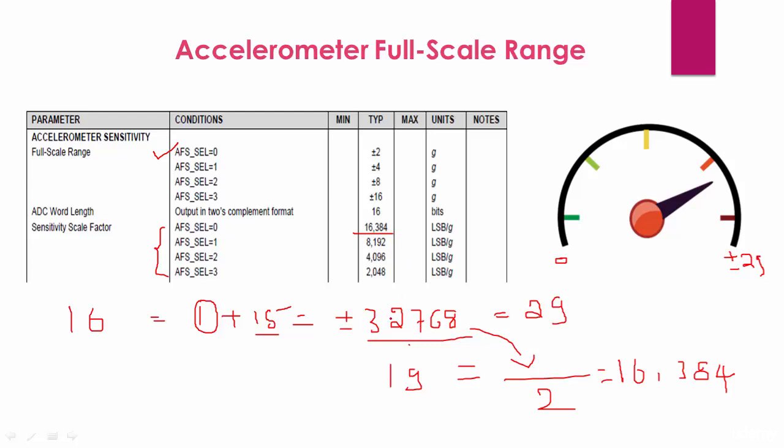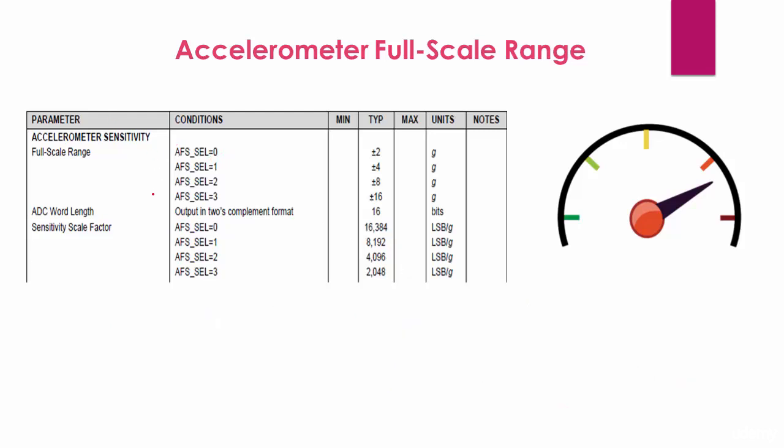So when the accelerometer is in full-scale option zero. Now let's say I select the full-scale range as 3. The output can go from 0 to plus or minus 16g. So the range is high. For every g, you have to look at here.